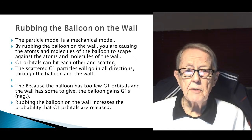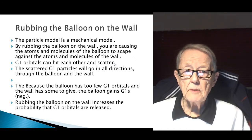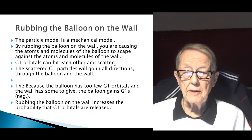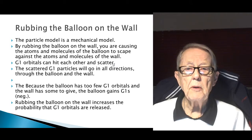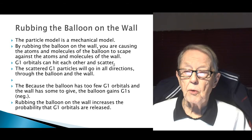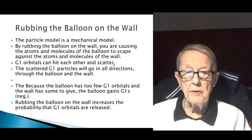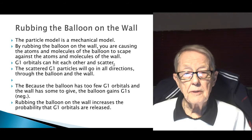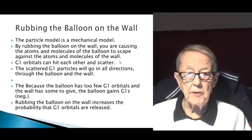Let's take the case of rubbing the balloon on the wall. The particle model is a mechanical model. By rubbing the balloon on the wall, you are causing the atoms and molecules of the balloon to scrape against the atoms and molecules of the wall. G1 orbitals, in this case, can hit each other and scatter.